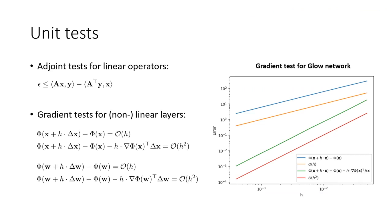Since we implement all backward passes and gradients manually, it's very important to ensure all implementations are correct. For all layers and networks we have a rigorous set of unit tests. For linear operators such as one-by-one convolutions, we do the adjoint test to verify that the forward and backward implementations are a correct adjoint pair. We also have a gradient test for all linear and non-linear layers, checking for second-order convergence.